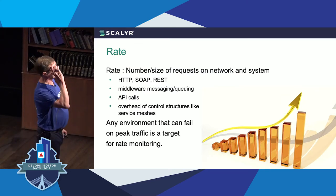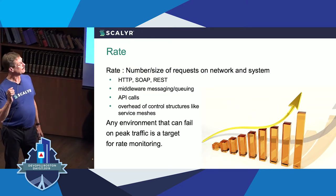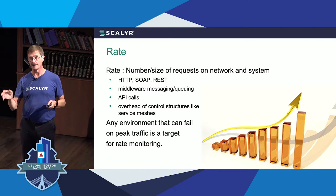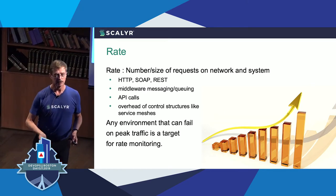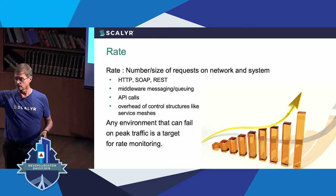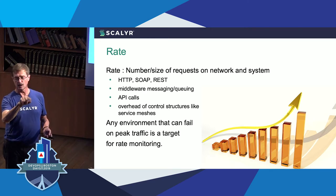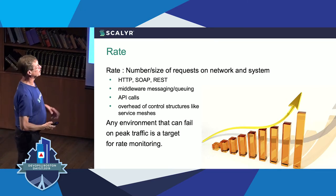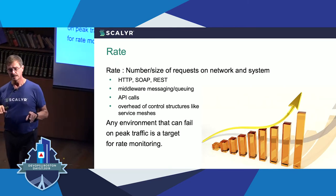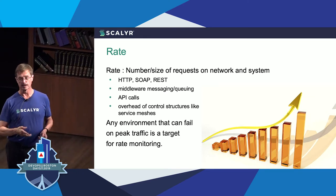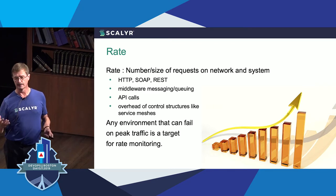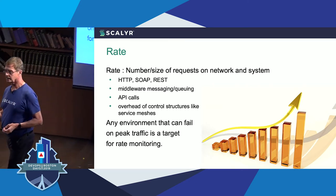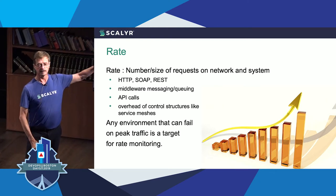Rate is the first part of RED — the size and number of requests going across your system. Rate gives you an overall picture of what's going on while allowing you to disaggregate into what is happening with any specific piece. You can look at not only the aggregate of hundreds of calls, but also drill down to see what a specific call took or generated. Rate also provides a measurement for overhead — if you're using a service mesh like Istio, Envoy, Linkerd, or Concorde, there's overhead involved. Any environment that can fail when you hit peak is a good candidate for a rate-oriented structure.